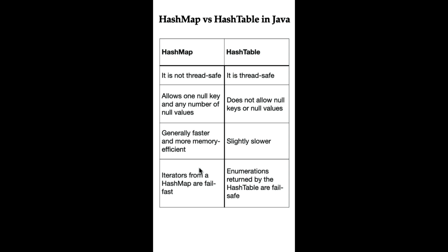HashMap has a fail-fast iterator, meaning if the HashMap is changed while iterating over it, it will throw a ConcurrentModificationException. Hashtable uses enumerations that are fail-safe, meaning they won't throw an exception if the Hashtable is modified during iteration.